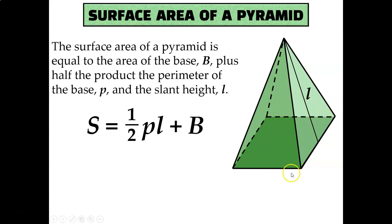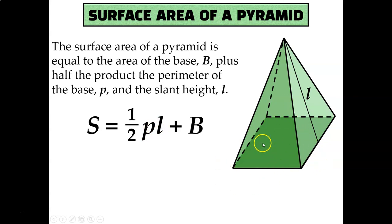If you prefer not to use the pyramid formula, you can break the pyramid into its parts — find the area of the base, then find the area of each of the four triangular lateral faces, and add everything together. But the surface area of a pyramid formula is doing that for you. The one half PL term calculates the area of all four triangles by using the total perimeter of the base times the slant height.